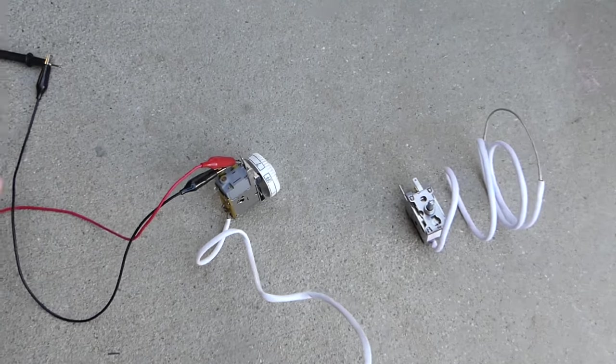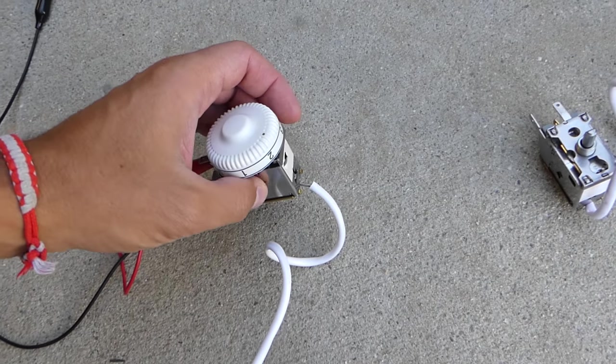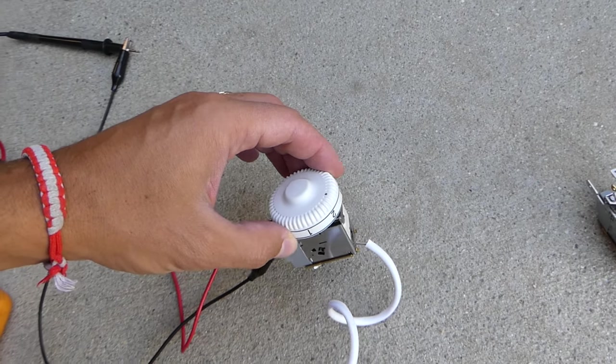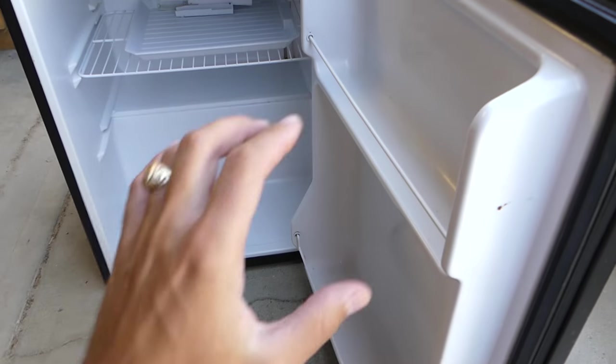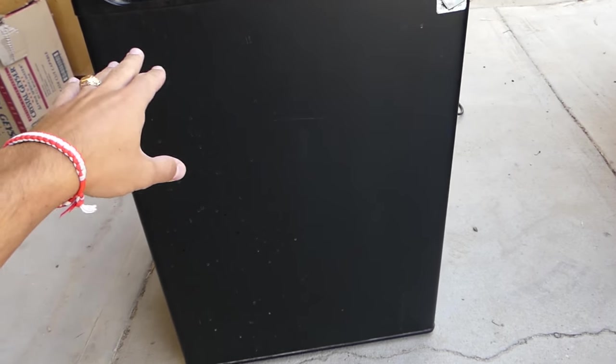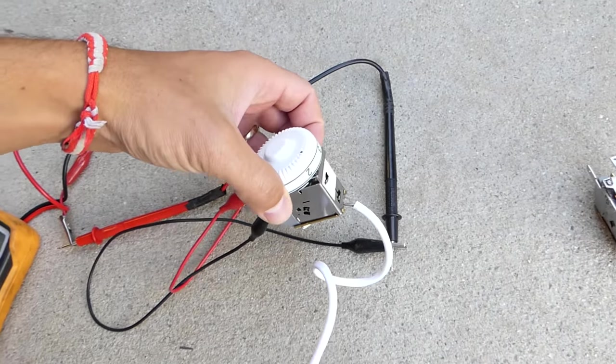Now how you test them guys: what could happen in that thermostat is either get stuck open or stuck closed. If it's open, what happens is the fridge will run all the time and it's going to get too cold. It will freeze everything inside. That's not good because your electric bill will go really high because the fridge will not turn off.